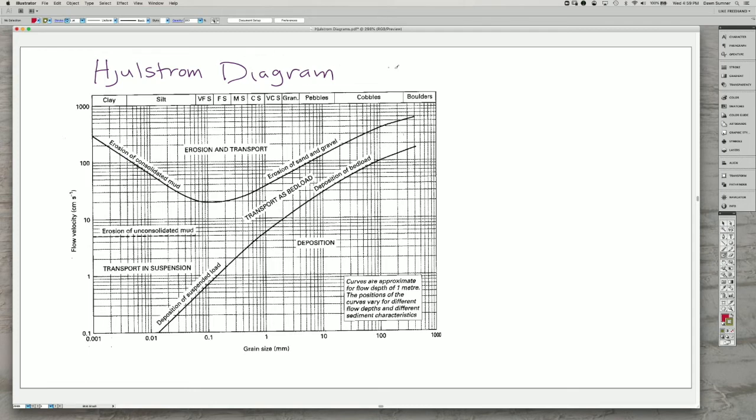So there's one more thing I want to talk about with the Hjulström diagram, and that is related to the Reynolds number. We have the Reynolds number as the flow speed, the flow depth, the density of the fluid, and the viscosity of the fluid.